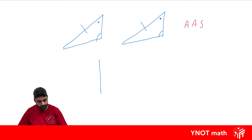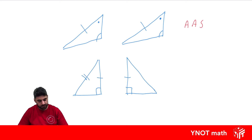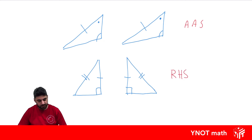One more. If we have a right-angle triangle and another right-angle triangle, and we know one pair of sides is equal, and the hypotenuses are also equal to each other, this test is RHS — R for the right angles being equal, H for the hypotenuses being equal, and S for one other pair of sides being equal. It doesn't matter which other side is equal, as long as one of the other sides are equal.